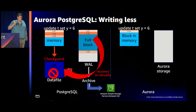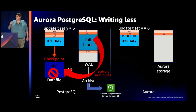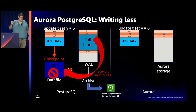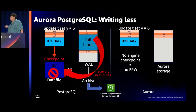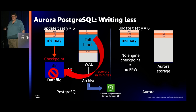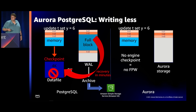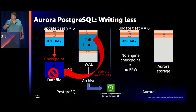In Aurora, for UPDATE T SET Y = 6, I put the log record in the log queue and push it down to Aurora storage. We don't do checkpoints and we don't write any data pages. The Aurora storage tier is intelligent — it knows how to take log records, replay them, and turn them into data pages. So we do a lot less I/O from not having to push data pages down to disk. That's part of why we can get more throughput in Aurora than with a regular Postgres instance.